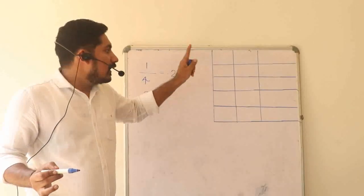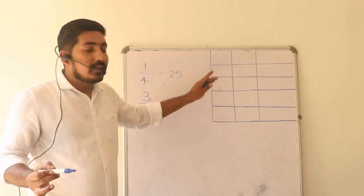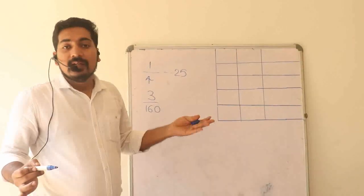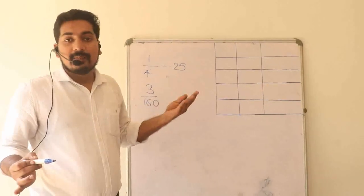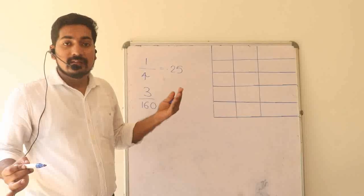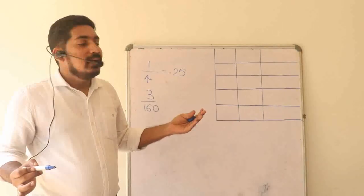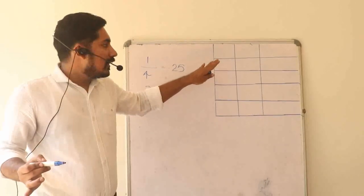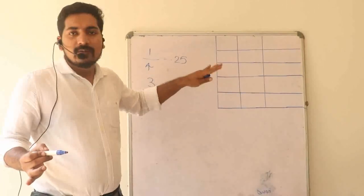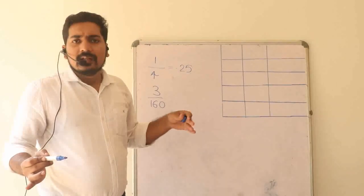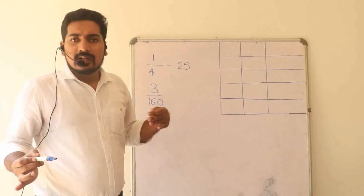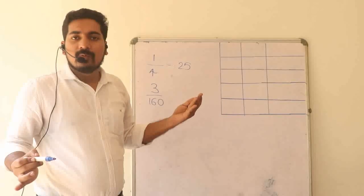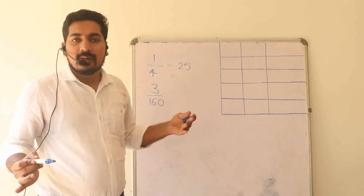Now, in the table, we have one chapter in the 9th class. We have two chapters. This is the decimal form. Now let's talk about this. In our career, we are going to talk about the topics in the exam. We are going to talk about the PSE exam.